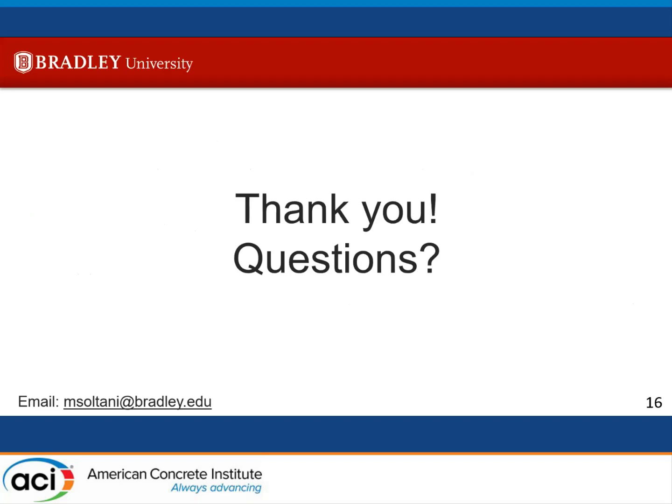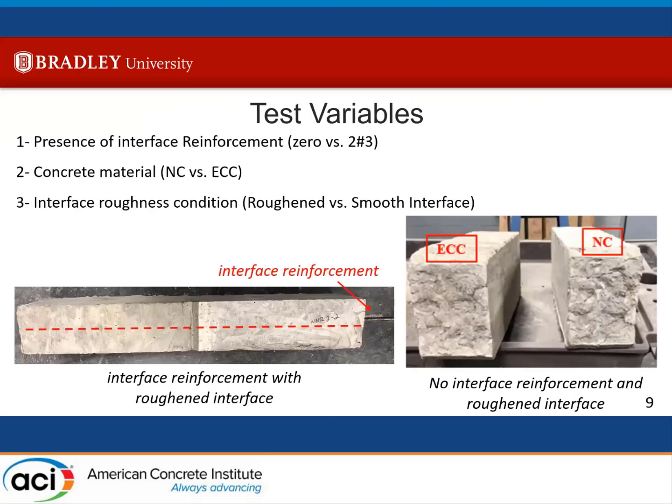Thank you. Any questions? The first question from the audience asks: how do you control the degree of smoothness and roughness of your specimens? When we cast the members, we would flatten out the top surface of each half, and that would be considered the smooth interface. For the roughened interface, we would make grooves in the concrete that were a quarter inch deep, following the AASHTO code for the IST model.